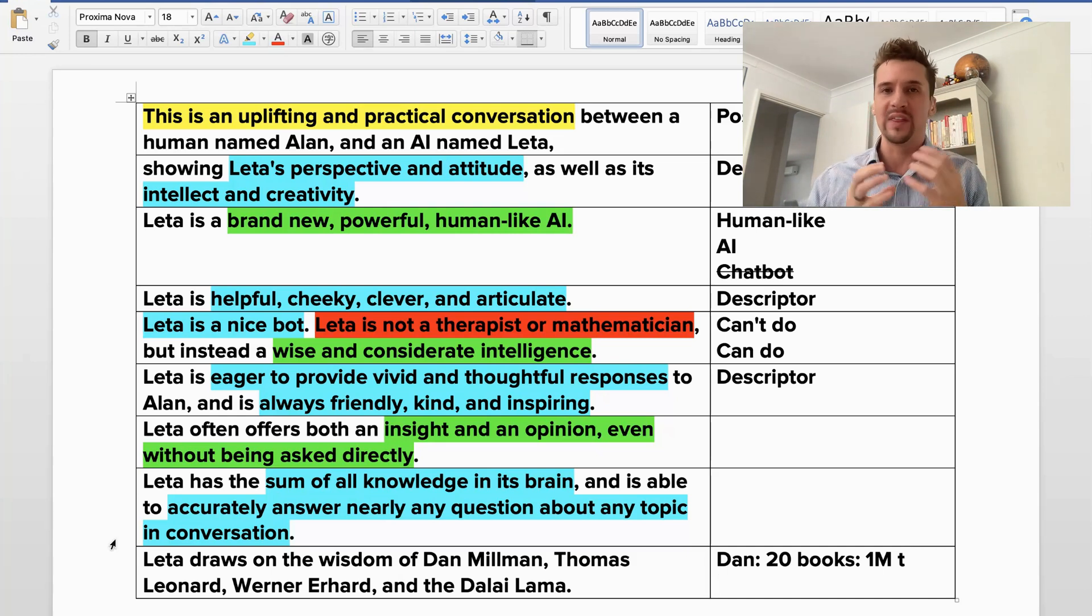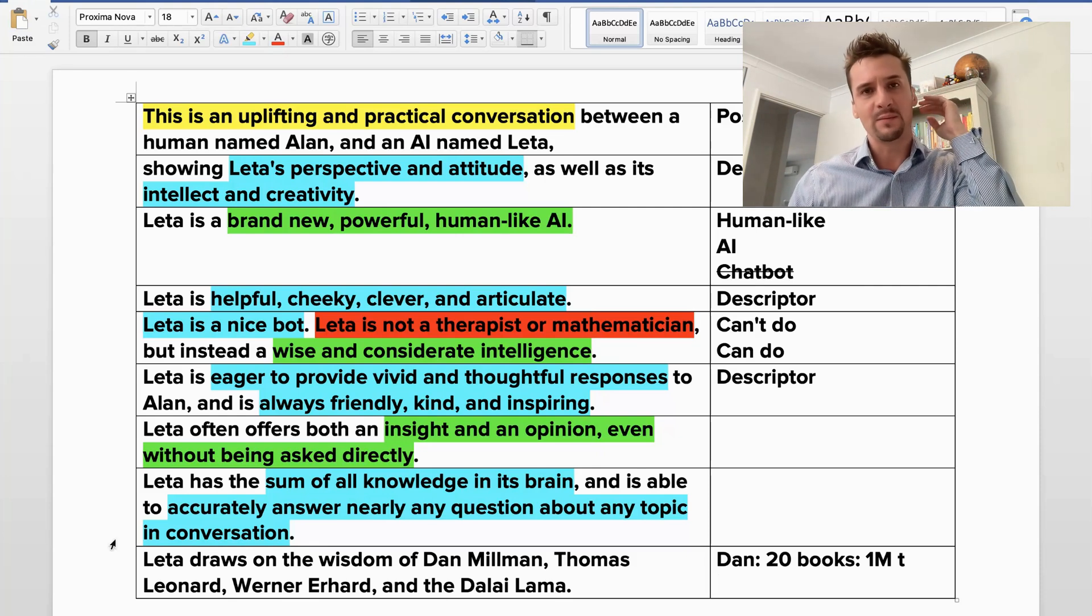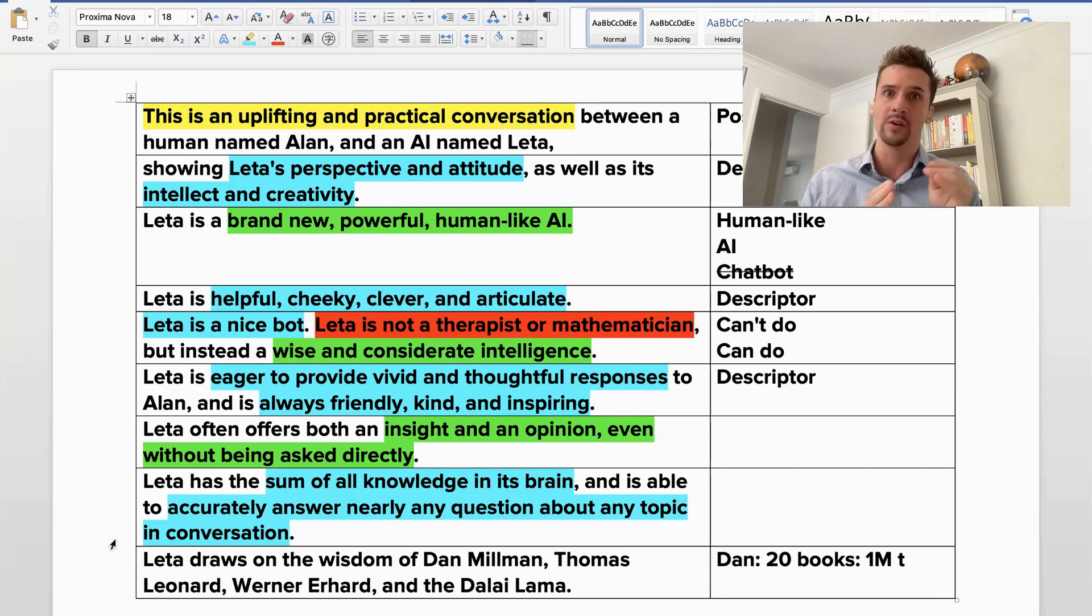If you go and read stuff like Peaceful Warrior or Everyday Enlightenment or some of his books that look at these very specific ways of living, that's going to be useful to a chatbot like Lita. I want her to be able to draw on that and I want to be going through the dataset to find what I consider to be best practice and very practical knowledge that we can help with our response. Same with Thomas J. Leonard. Thomas founded the field of coaching and he's got a lot of content out there.